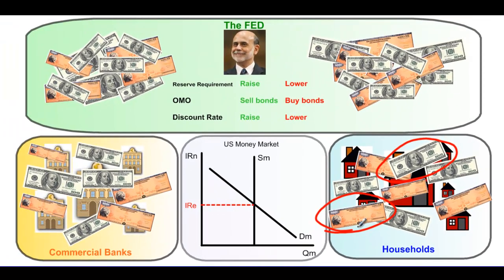Government bonds play a very important role in monetary policy. Government bonds are an illiquid form of asset — unlike money, they cannot be used to buy goods or services. Therefore, if the central bank wishes to increase the supply of money, they can buy up some of the government bonds from households and commercial banks in exchange for liquid money, which can then lead to more consumption and investment in the economy.